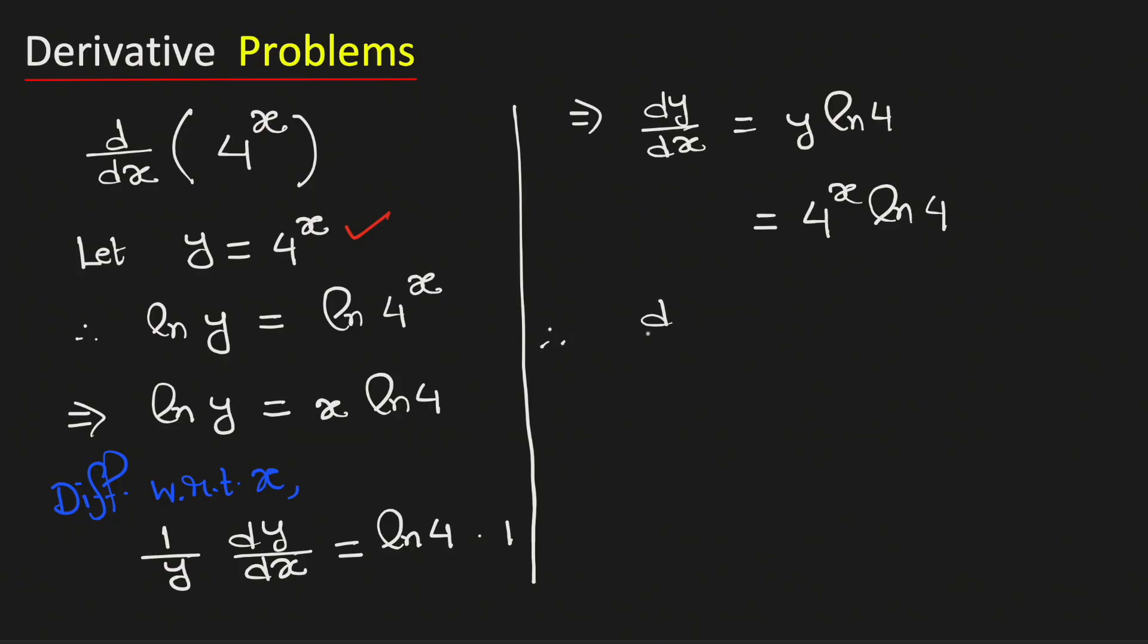Therefore, the derivative of 4 raised to the power x with respect to x equals 4 to the power x times ln 4. This is our final answer.